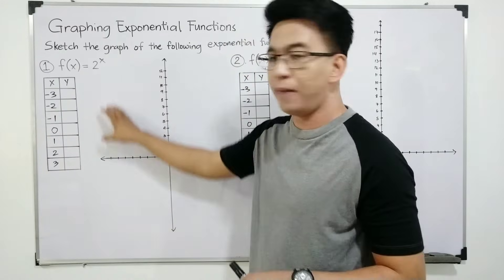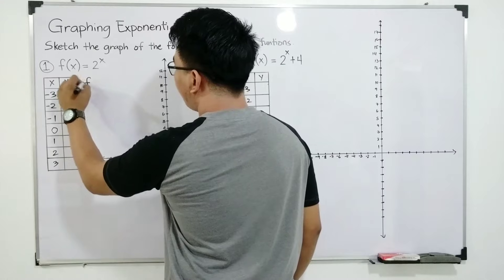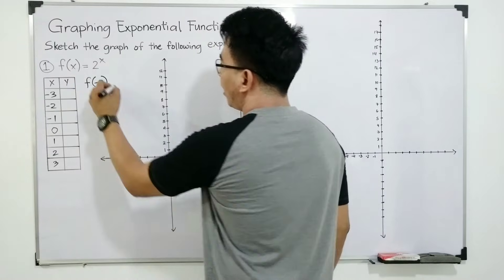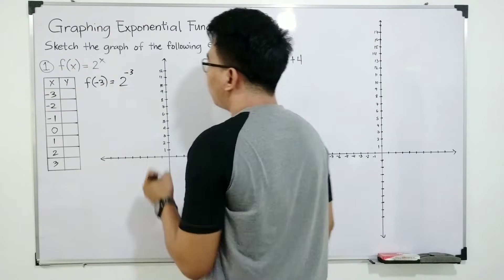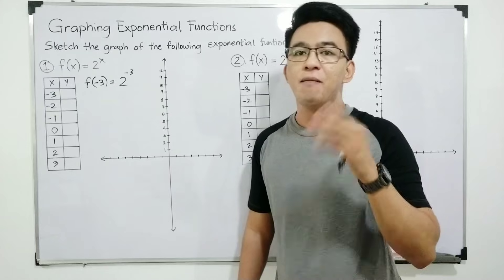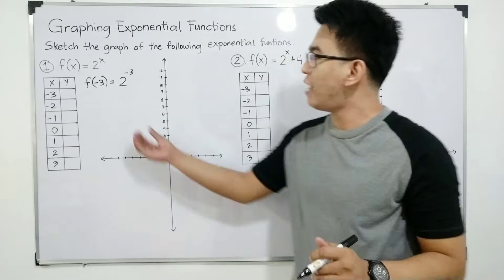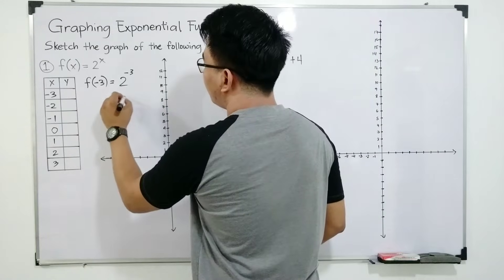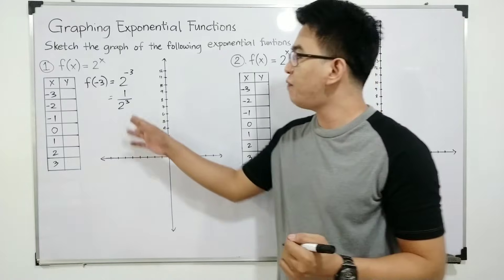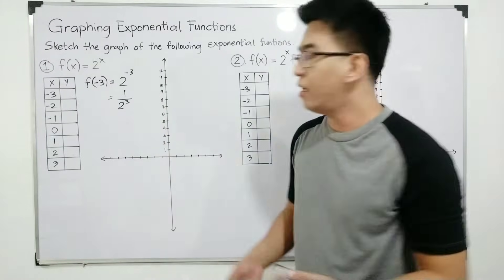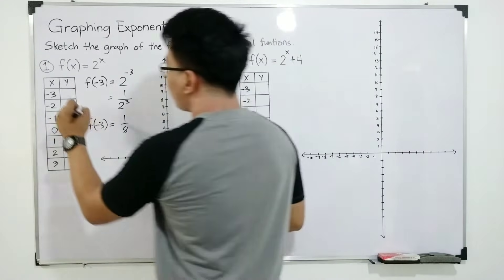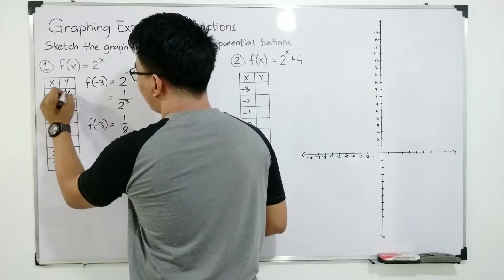Let us use negative 3. I will be using this space para sa ating solution. If I have f(x) = 2 raised to x and the value of x is negative 3, this will become 2 raised to negative 3. Since the exponent is negative, this will become 1 over 2 raised to 3. That's why f of negative 3 is equal to 1 over 8. This is the first value of y. If your x is negative 3, you have 1 over 8.